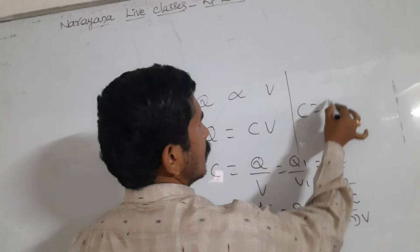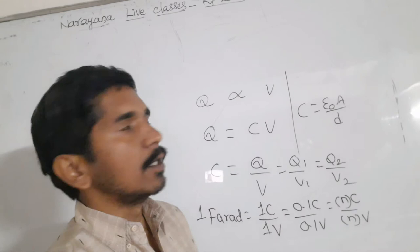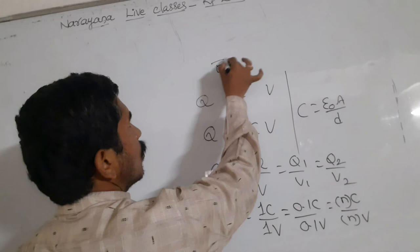So capacitor is epsilon naught A by d. How are we deriving that one? By Gauss's law, as well as we are reading that E dot dS bar is equal to Q by epsilon naught.